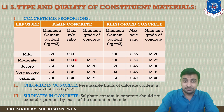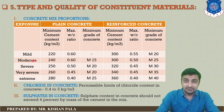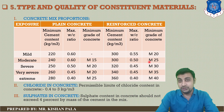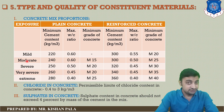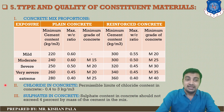Regarding the water-cement ratio in moderate exposure condition: for PCC, you can use up to 0.60, and for RCC up to 0.50. For minimum grade of concrete in moderate exposure: for PCC use at least M15, and for RCC use at least M25. These are the exposure condition requirements and minimum criteria you should follow for durability.